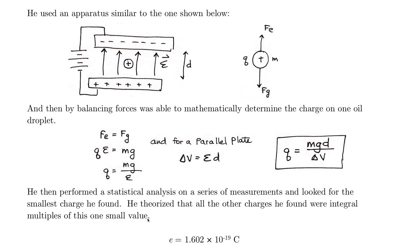And then he theorized that all other charges he found were integral multiples of this small one. And that makes sense. If the charge on anything is just a whole bunch of electrons, then let's say I had a droplet with five electrons. The charge on that droplet would have been five times the charge on one electron. Let's say there was another oil droplet and it was ten electrons, then the charge would have been ten times the charge on one electron.